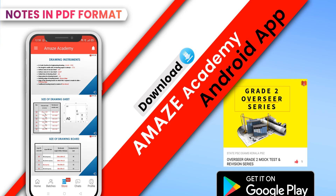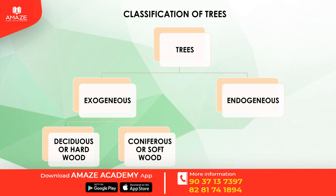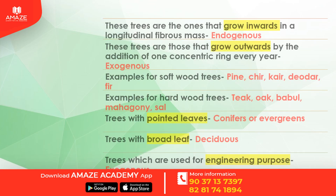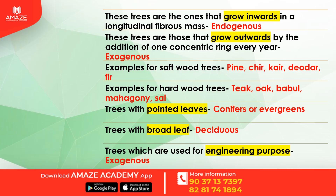Quick revision notes are also available in the Amaze Academy app in PDF format. Trees are classified into two types: exogenous trees and endogenous trees. Exogenous trees are classified as deciduous or hardwood trees and coniferous or softwood trees. Endogenous trees are those that grow in a longitudinal fibrous mass. Exogenous trees are those that grow outwards by the addition of one concentric ring every year.